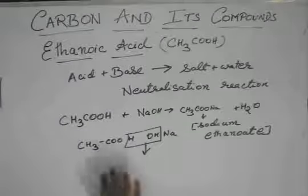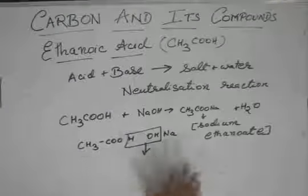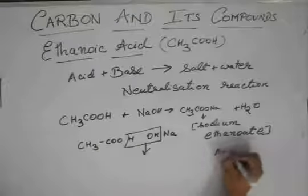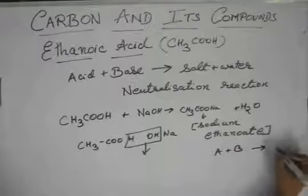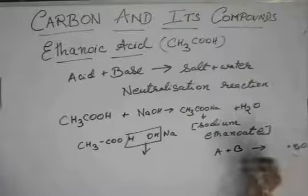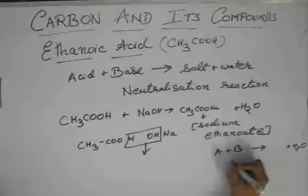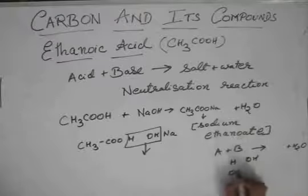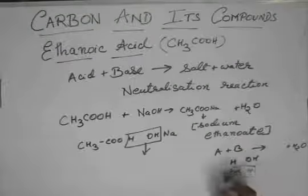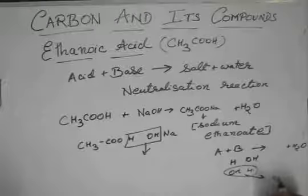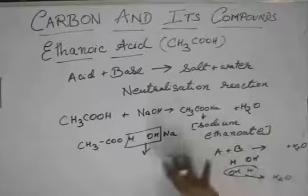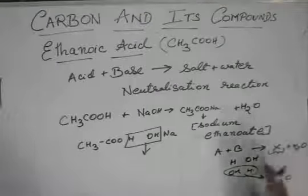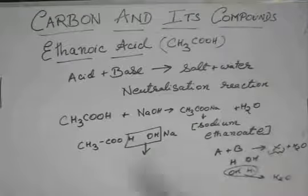Basically, whenever you get reactions of this water coming out, you just try to take—suppose you have A and B reacting to give something and water—just try to take out an H from A and an OH from B, or an OH from A and an H from B, and take out this water. This will make H2O, and then the rest you just join together, and this will make your other product.